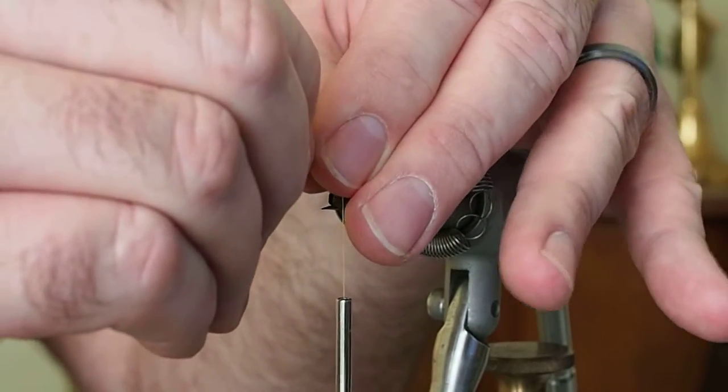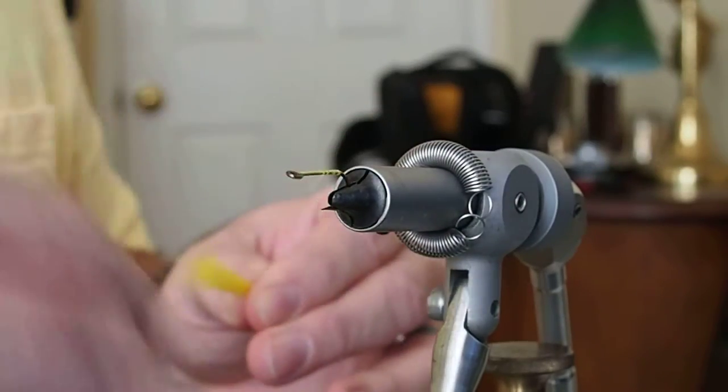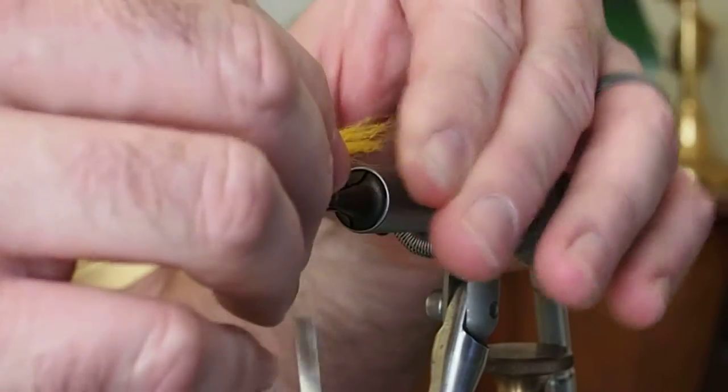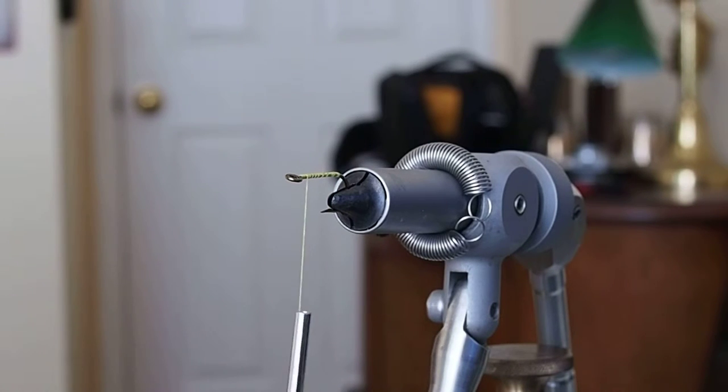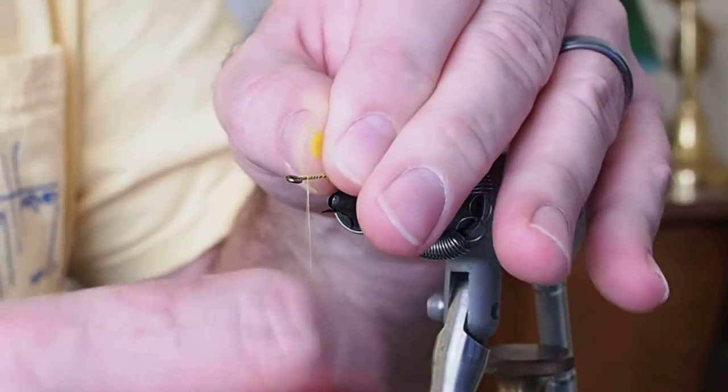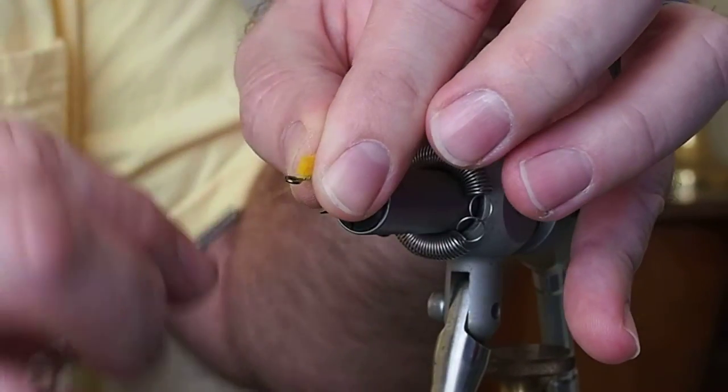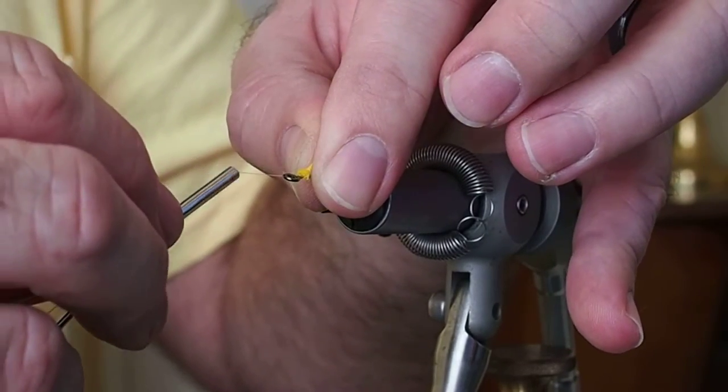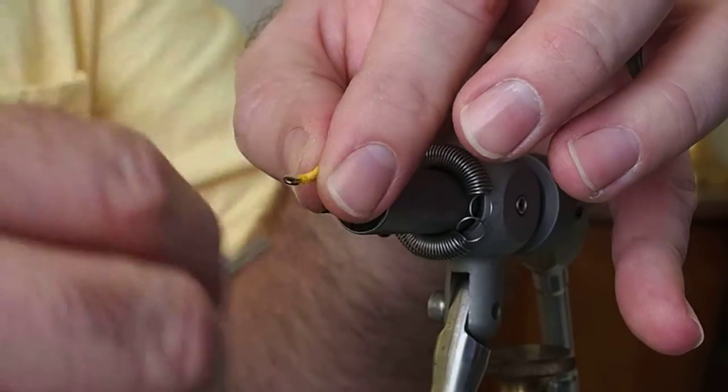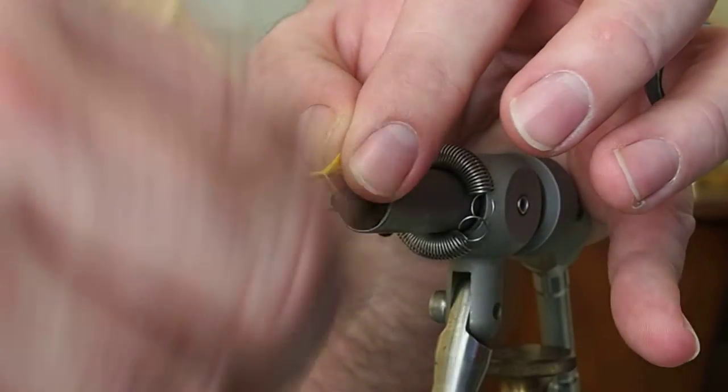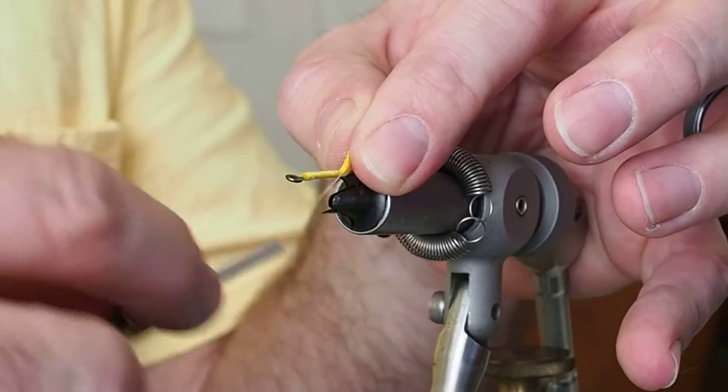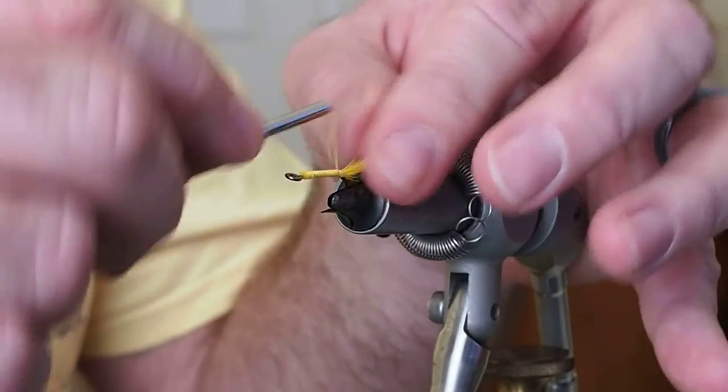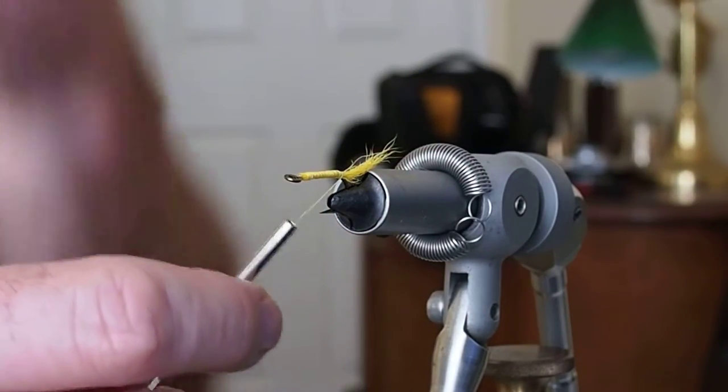Alright, that looks about right. I'm going to bring my thread back up. I'm just going to tie that in and bring it back to the bend of the hook. Short, stubby little tail there and a little bit thicker body.